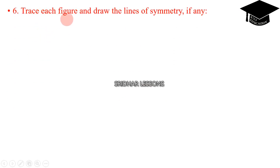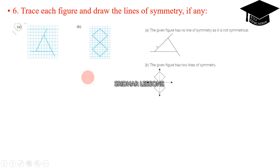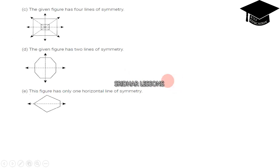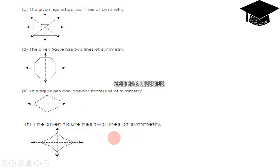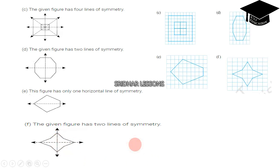Question 6: trace each figure and draw the lines of symmetry if any. Question A: the given picture has no lines of symmetry because it is not symmetrical. Question B: two lines of symmetry. Question C: four lines of symmetry — line 1, line 2, line 3, line 4. The next picture has two lines of symmetry, one horizontal and one vertical. And another figure has only one horizontal line of symmetry. The final picture has two lines of symmetry — one horizontal and one vertical.